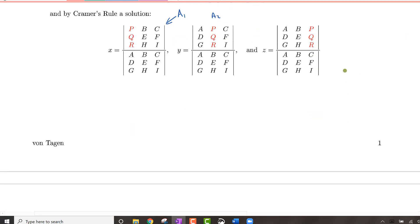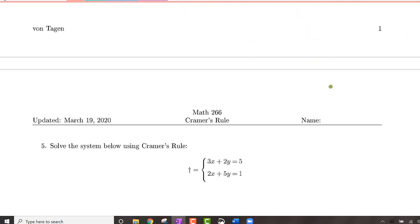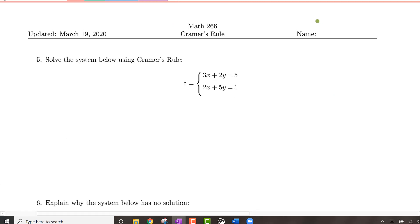OK folks, now let's look at an example of this. So number five asks us to solve this system right here. It's a system of two equations, two unknowns. And we're asked to do it using Cramer's rule.